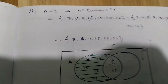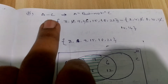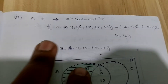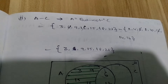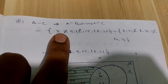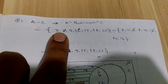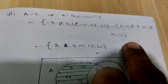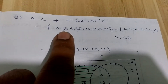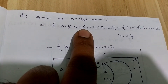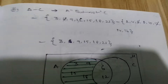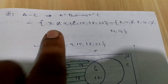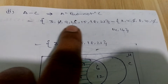Now coming to A minus C — A minus C is nothing but A but not C, read as 'A but not C.' Set A is multiples of 3 and set C is multiples of 2. What is common among these two? 6 is common and 12 is common. So other than 6 and 12, mention the remaining elements in set A: 3, 9, 15, 18, 21.